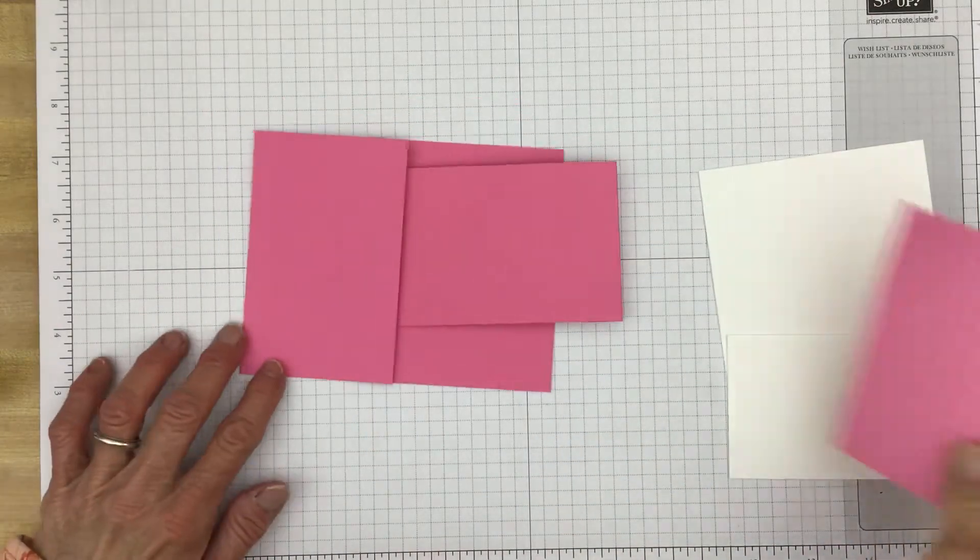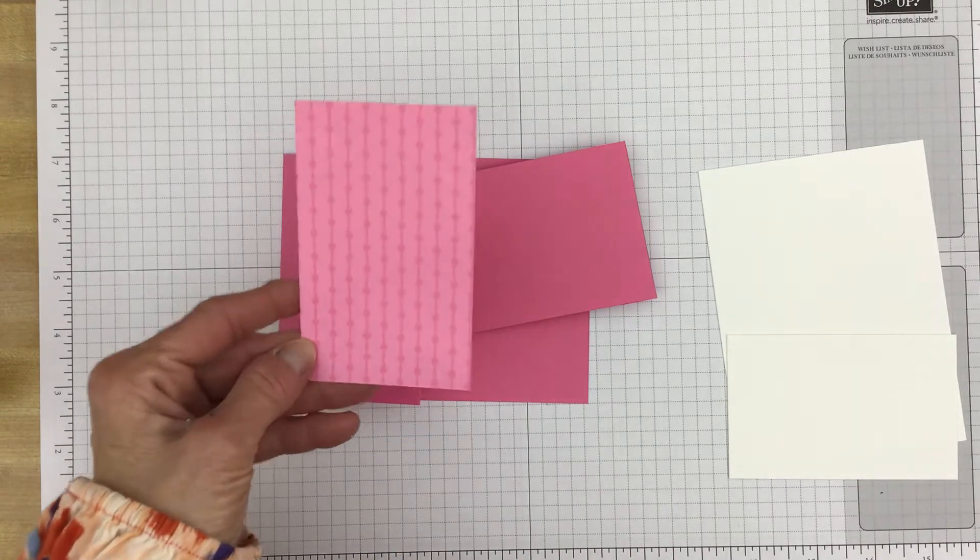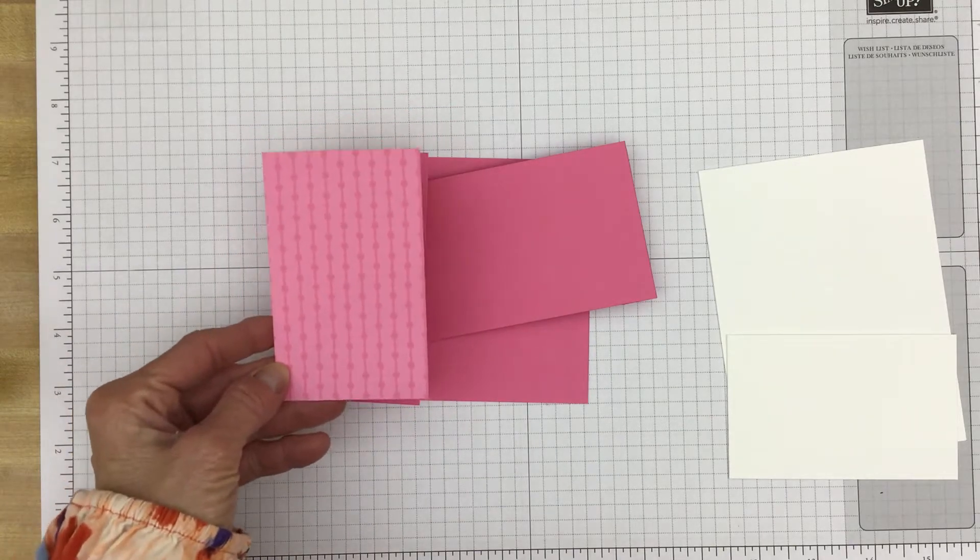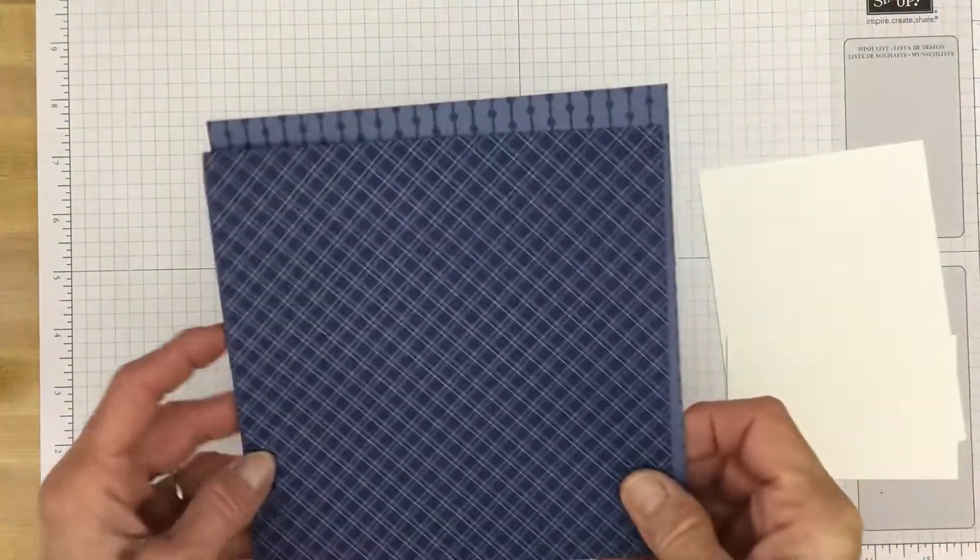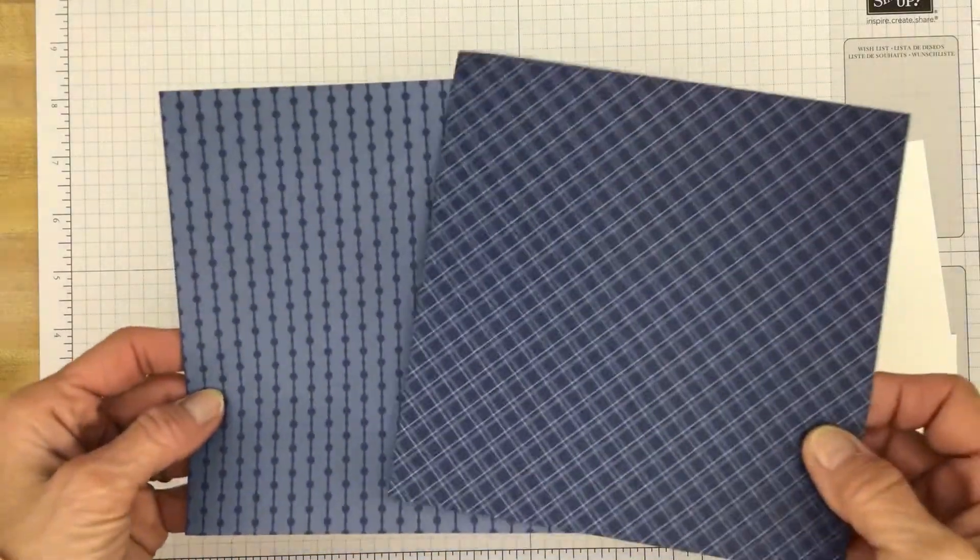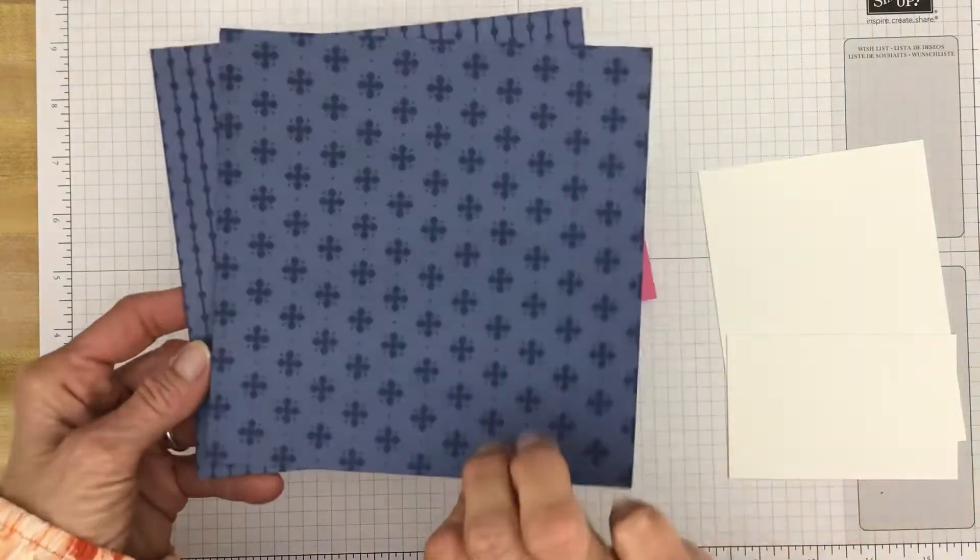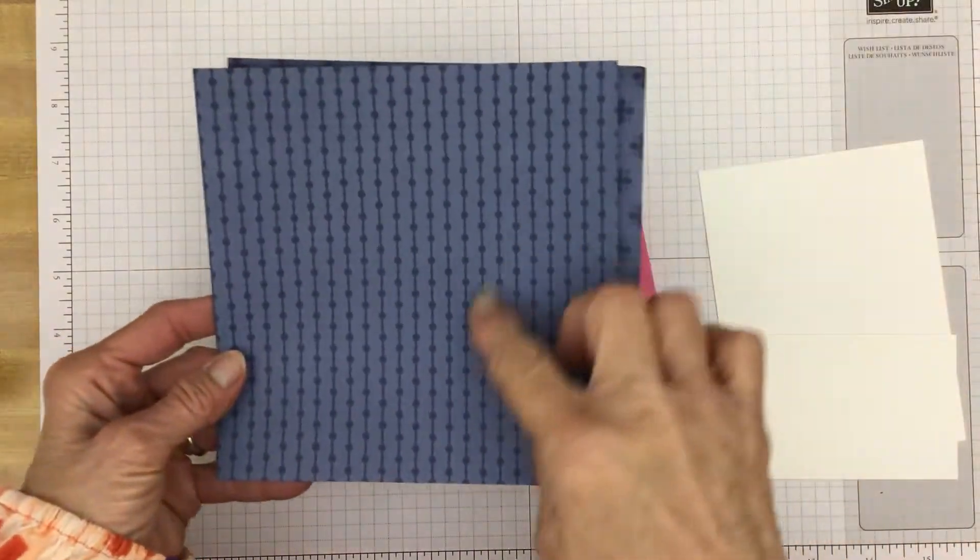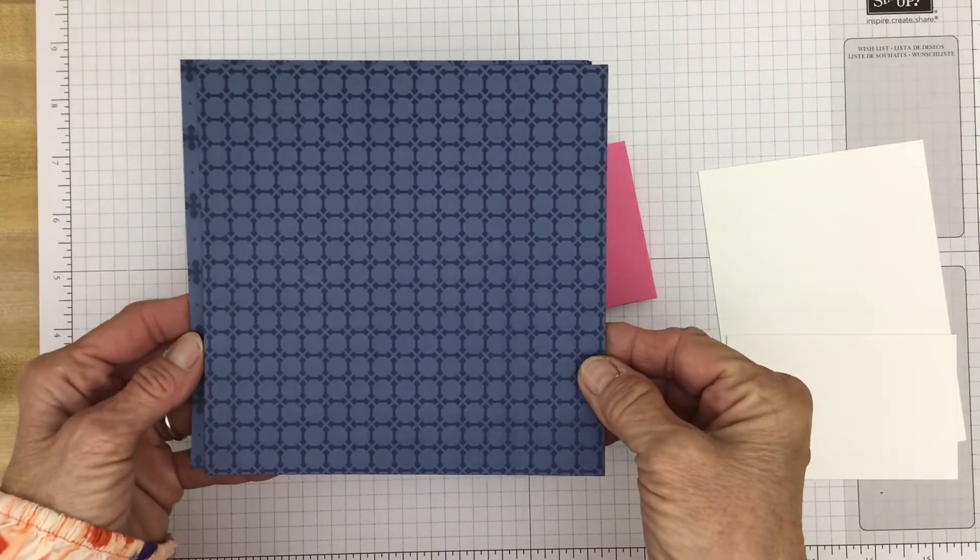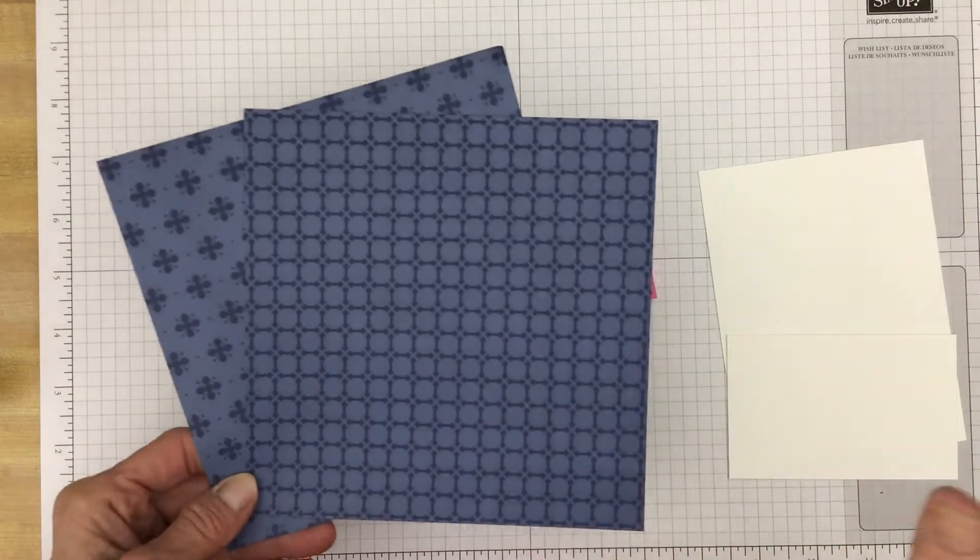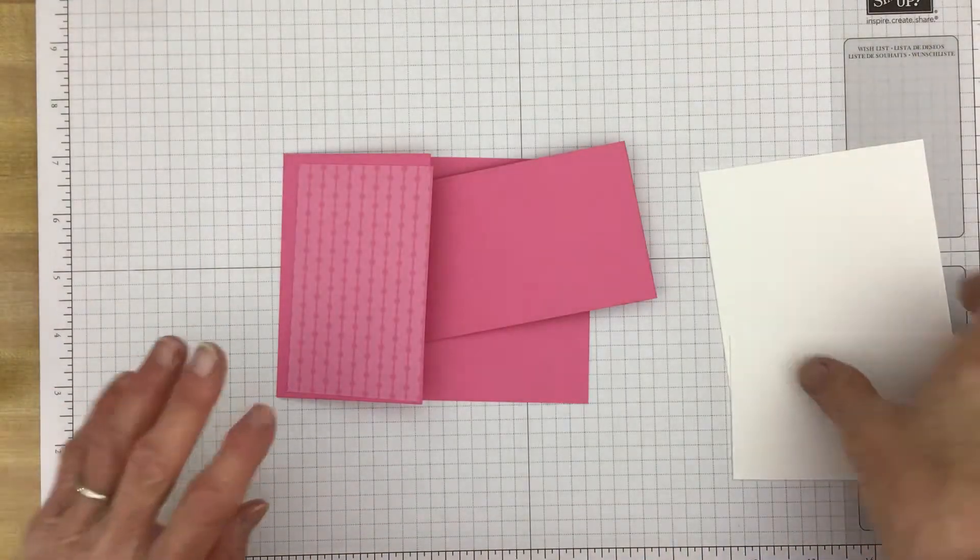And then I used some designer series paper. And this is from the six by six designer series paper. It's in the annual catalog. And you can get it in all the color families. This one of course would be from the 2021 to 2023 in color family. But here it is in Night of Navy which would be in the neutrals family. And you get four different designs. You know two-sided but there's four designs. There's this nice design. And then on the back of it is this one. And this is the design we'll be using today. There's what's on the other side of it. Like I say these designer series papers you can get them in all the colors and both in color families and in the other four color families.